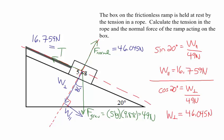Those were the two things we were looking for. With the box at rest on the ramp, the tension is 16.759 newtons and the normal force is 46.045 newtons. Because this is not a flat surface, the ramp only needs to push up enough to cancel the component of weight perpendicular to it. The rest of the weight — the parallel component — is canceled out by the rope.